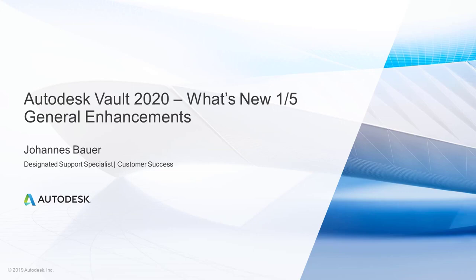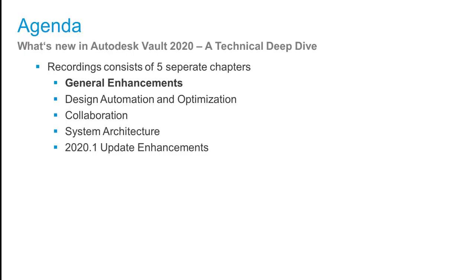Let's take a look at what we are planning to discover in this series. The technical deep dive includes five separate chapters. This first one covers general enhancements. The second is about design automation and optimization. We continue with enhanced collaboration in Vault 2020. As Vault is a client-server architecture, there are also updates in system architecture and administration.